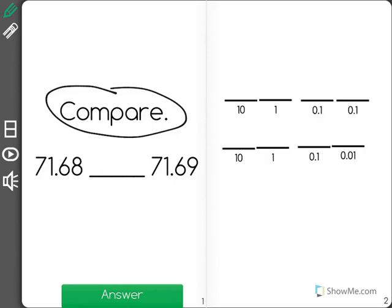As you can see over here, I have my place value markers and I'm going to fill them out with each number: 71.68 on top and 71.69 on the bottom. Now when we're comparing to see which one is greater than the other, we start with the greatest place value and move our way down to the least.